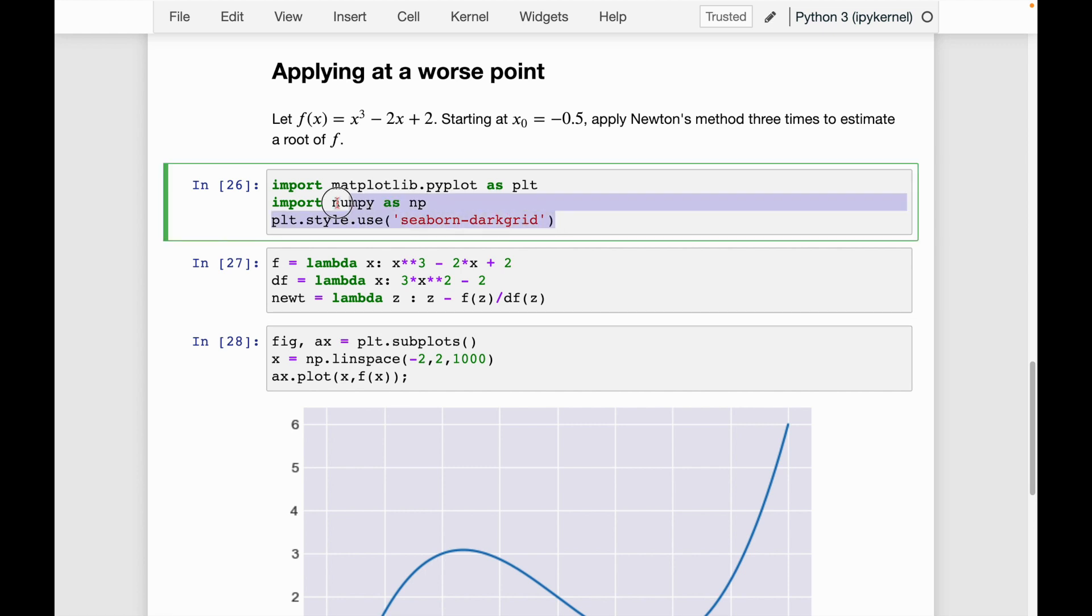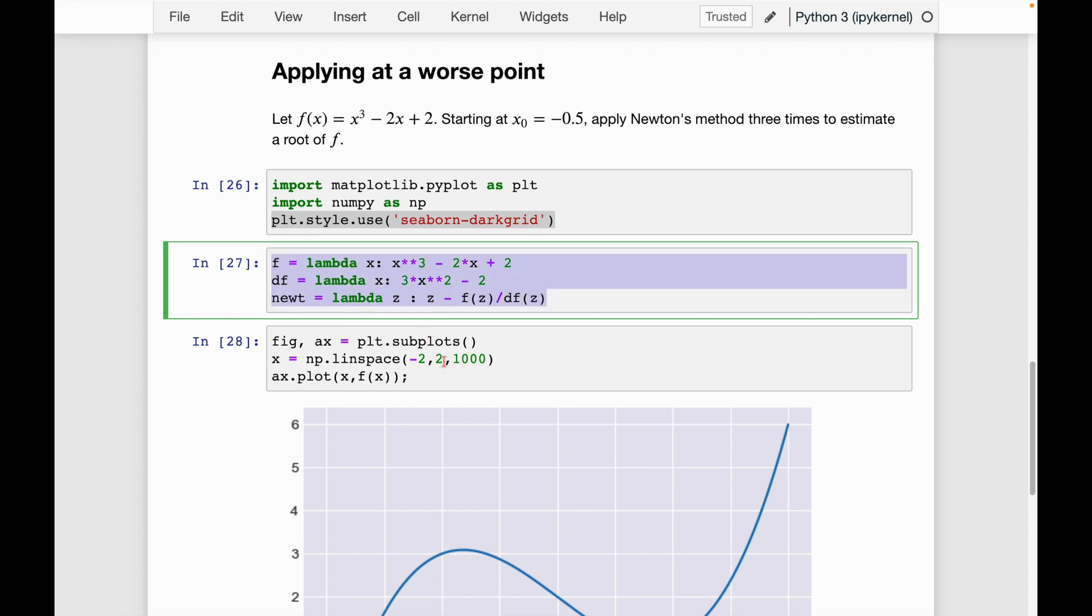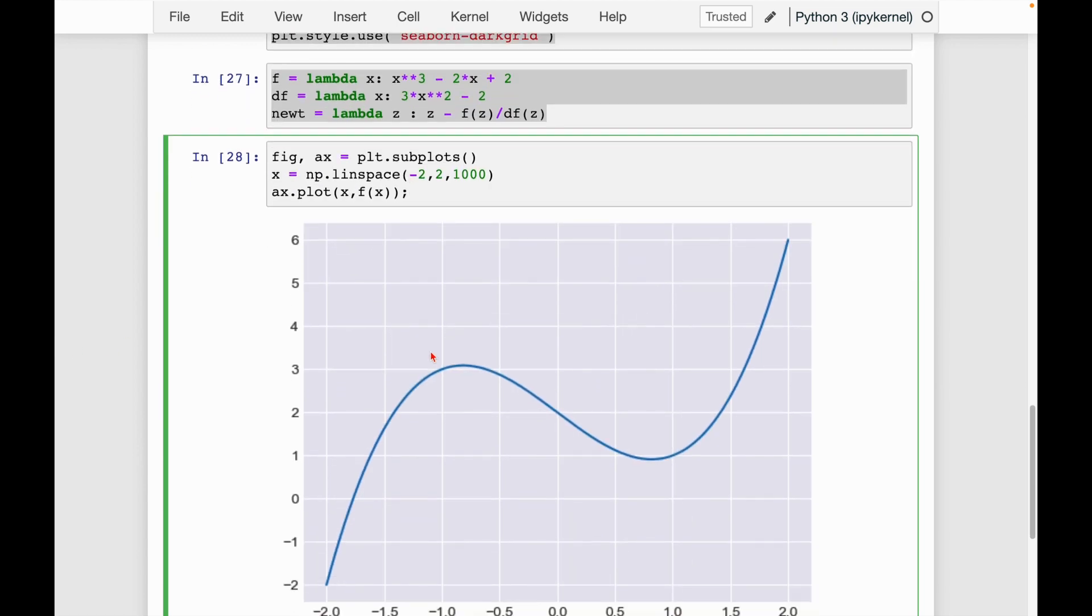So all I have here is some of the code copied from last time. This is just the style we're using for our plots. Here is our function, the derivative, and the function we wrote that returns x after one iteration of Newton's method. And here's just the plot of our function f of x.